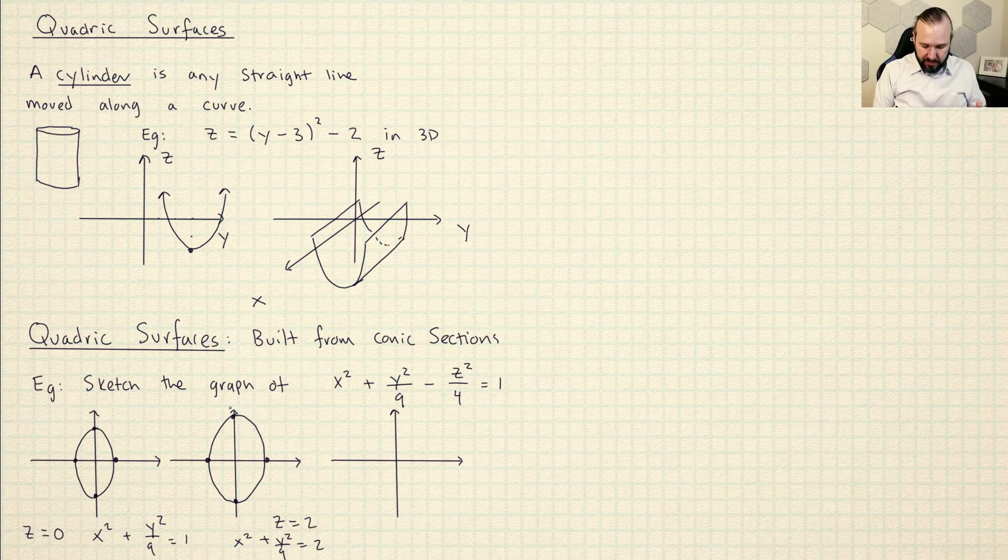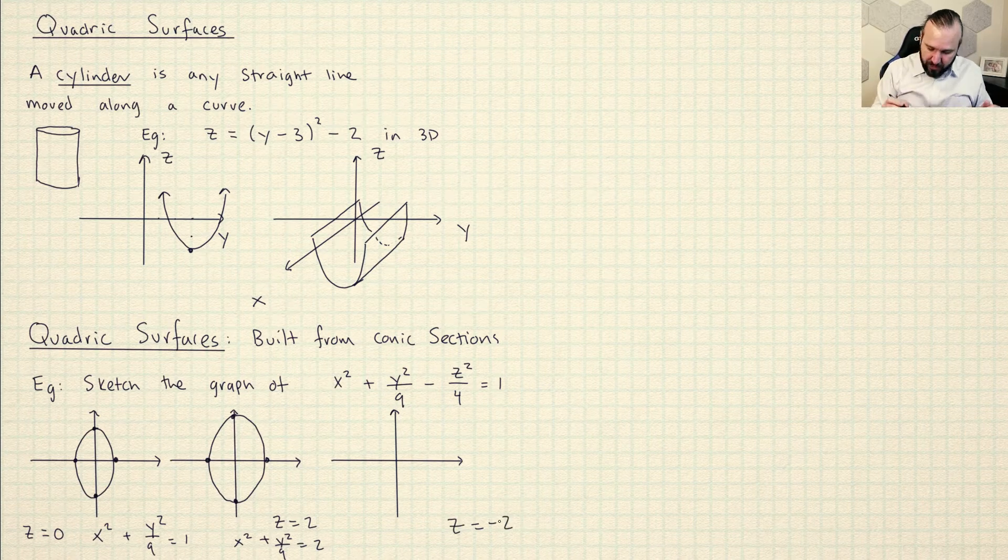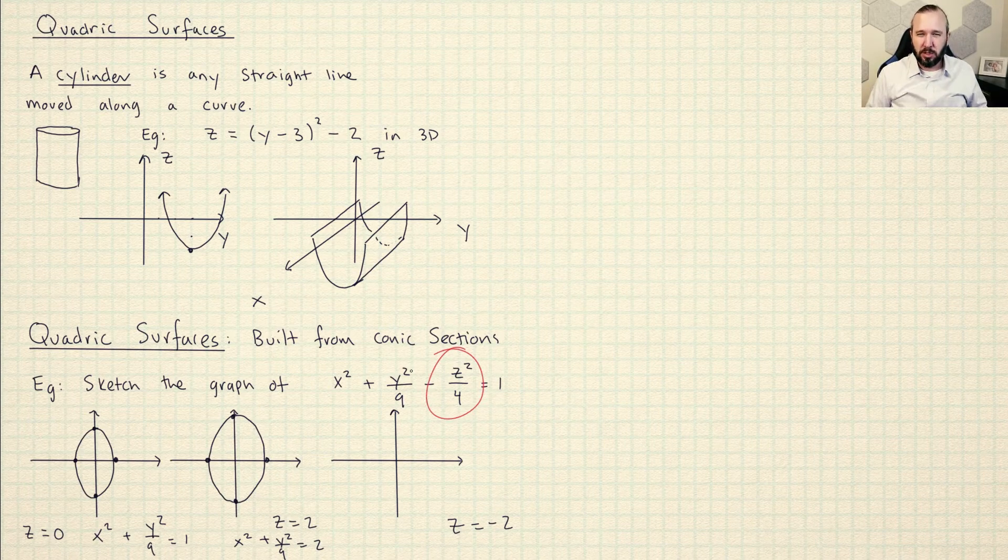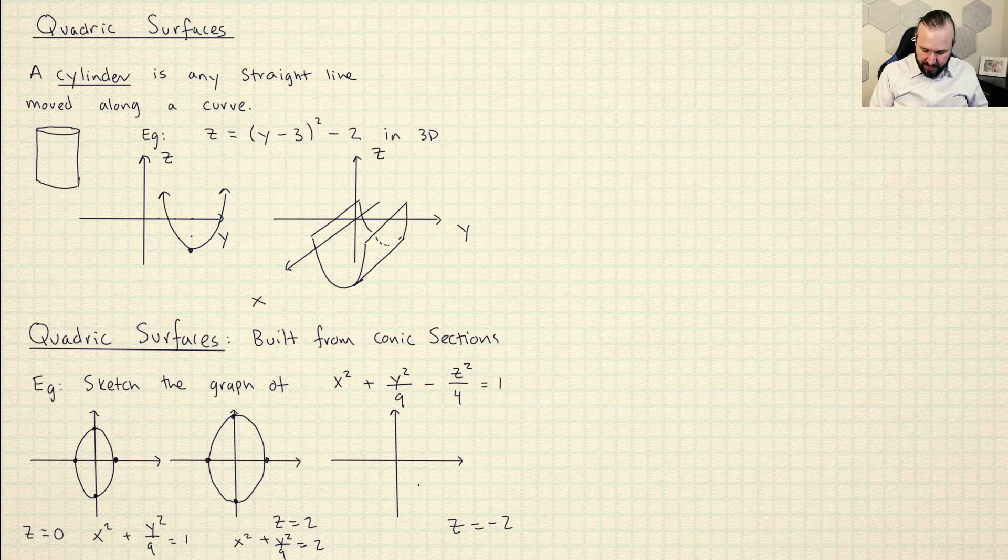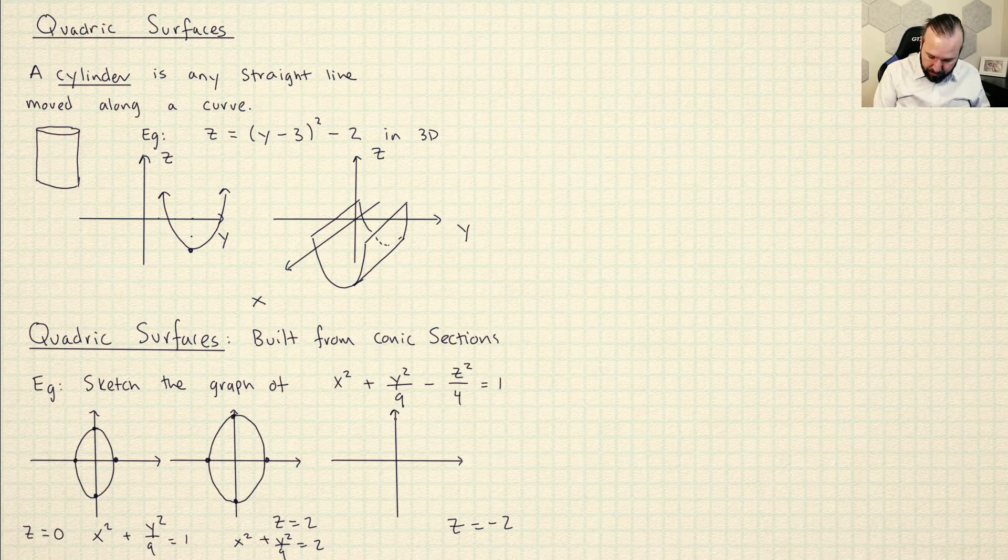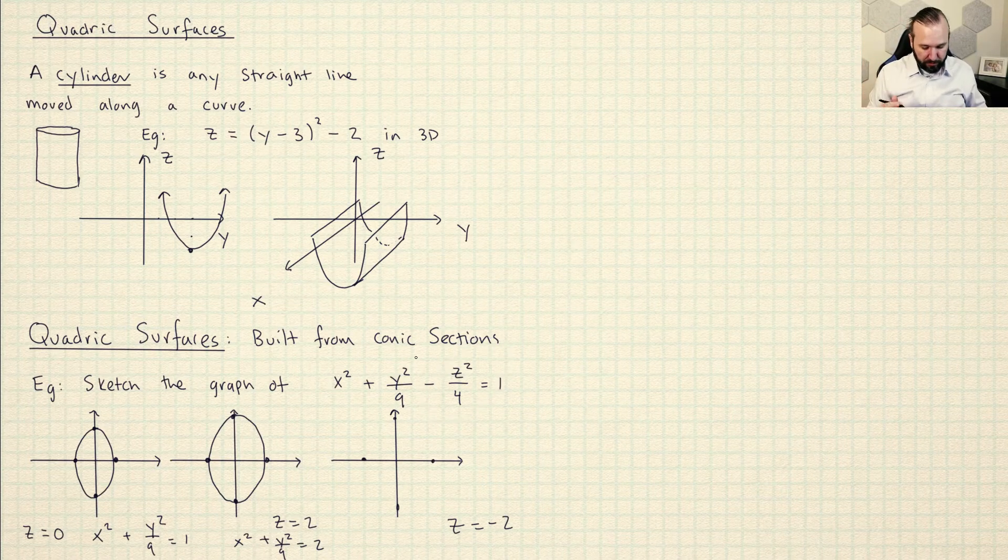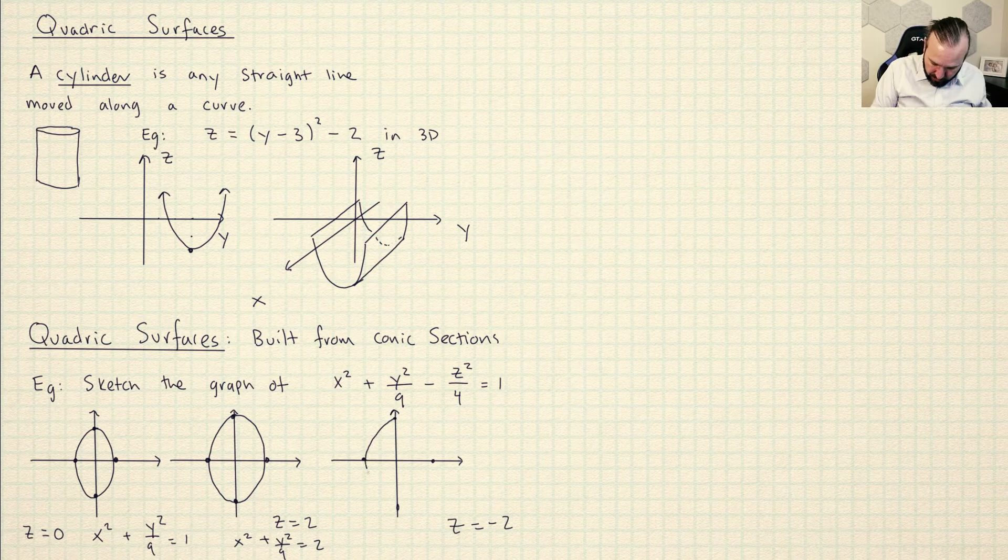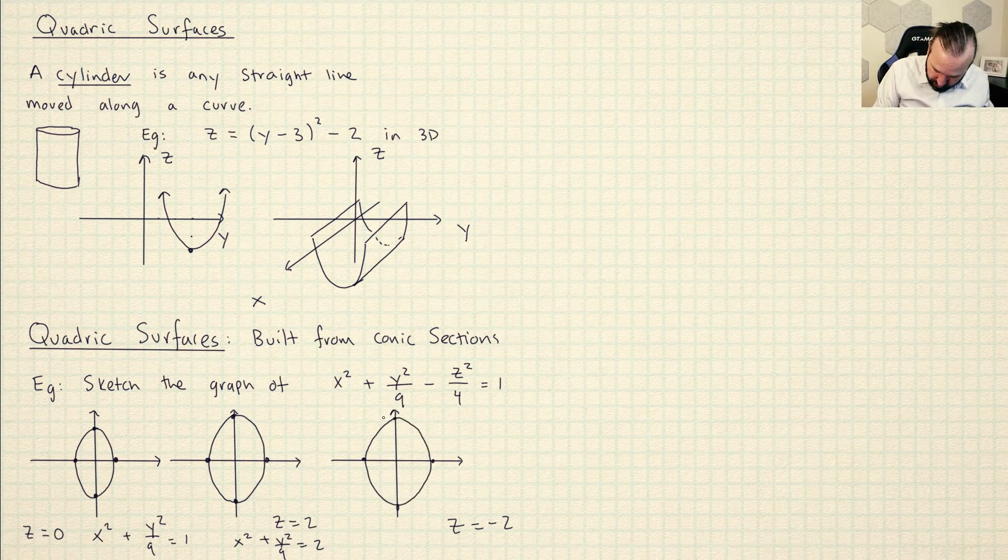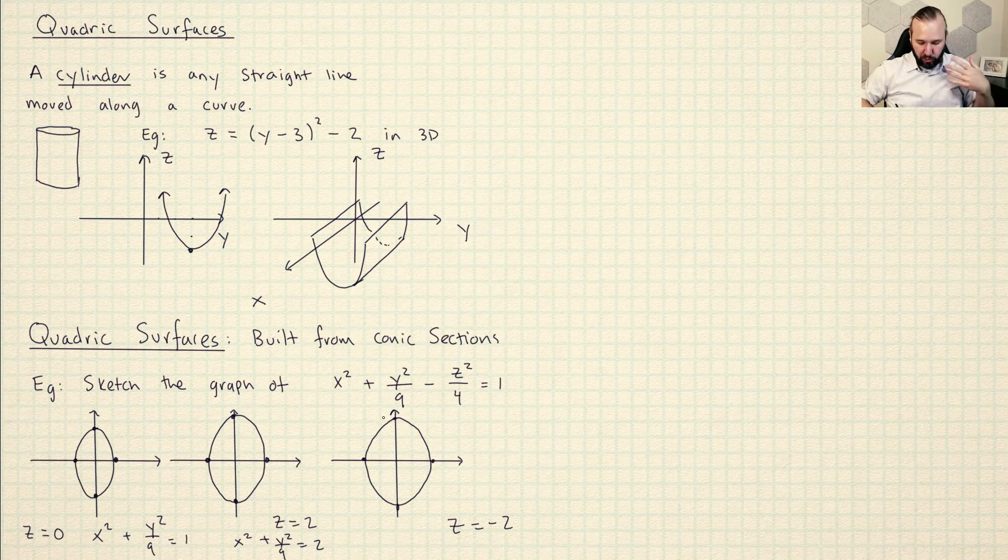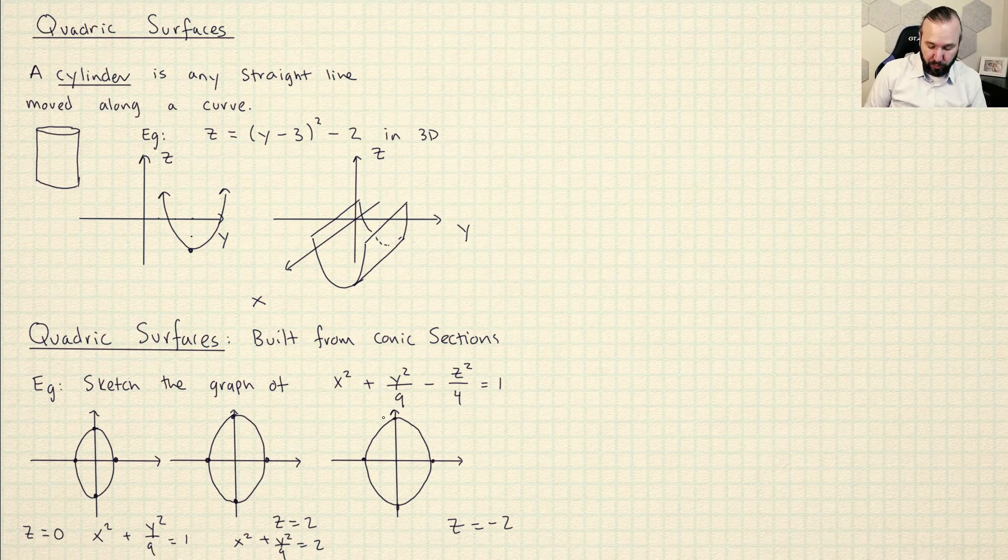And then one more thing about this is if I pick Z is equal to negative 2, hopefully you can see because this Z, the first thing you do to Z is you square it. Then this is actually going to be the same picture because it doesn't matter if I choose a positive Z or a negative Z. When I plug it into Z squared, I'm going to get the same answer. So what this means is that this surface is symmetric. The part of it that's above the XY plane looks the same as the part of it that's below the XY plane.